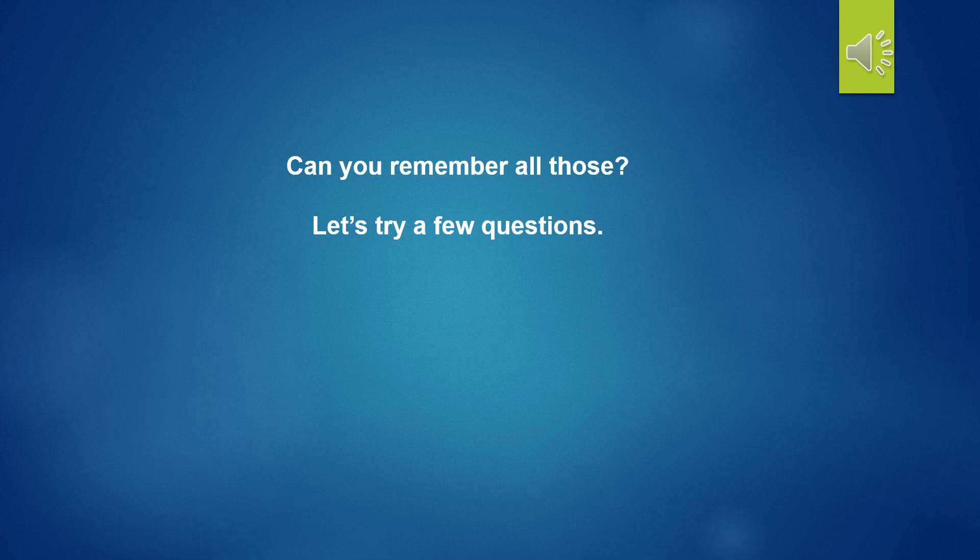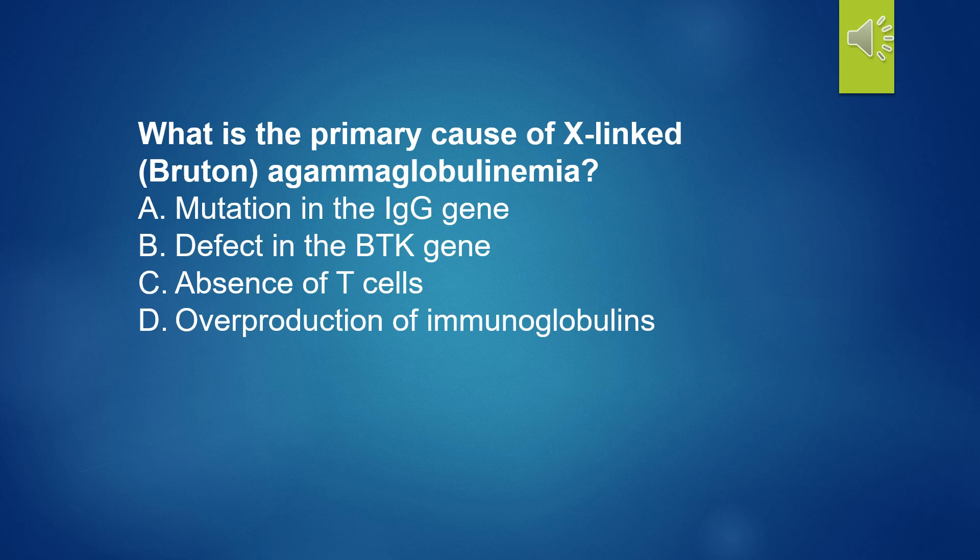Let's try a few questions. What is the primary cause of X-linked Bruton agammaglobulinemia? A. Mutation in the A gene. B. Defect in the BTK gene. C. Absence of T-cells. D. Overproduction of immunoglobulins. The answer is B — defect in the BTK gene.